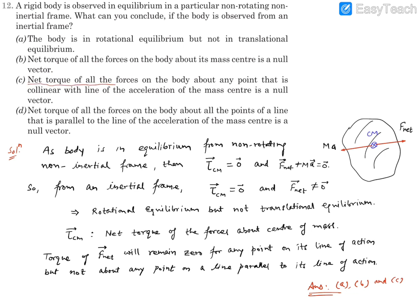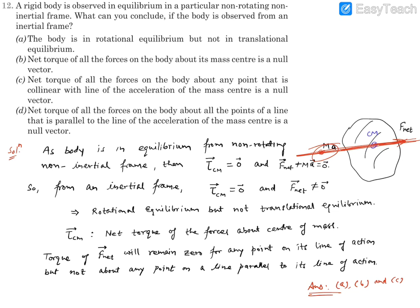Statement C says the net torque of all forces on the body about any point that is collinear with the line of acceleration of the center of mass is a null vector. This net force gives an acceleration along this line. If we take any point on this line and find the torque, that torque is going to be zero, because the force's torque is zero with respect to any point on this line. Moreover, all other forces' torque was already zero, so it remains zero. So the net torque is zero about any point collinear with the direction of acceleration — C is also correct.